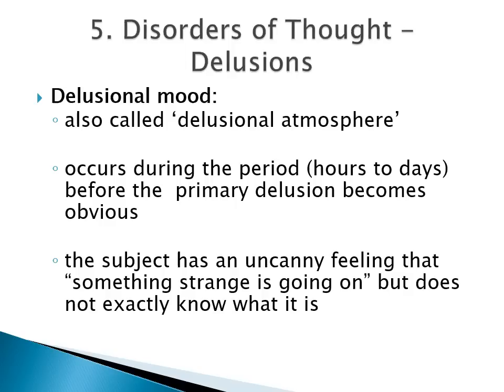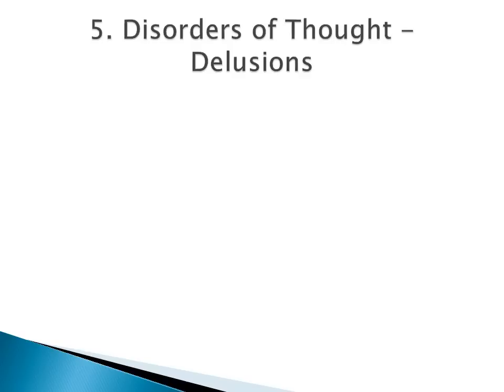Delusional mood, also called delusional atmosphere, occurs during the period a few hours to a few days before the primary delusion becomes obvious. The subject has an uncanny feeling that something strange is going on but is unable to pinpoint exactly what it is.